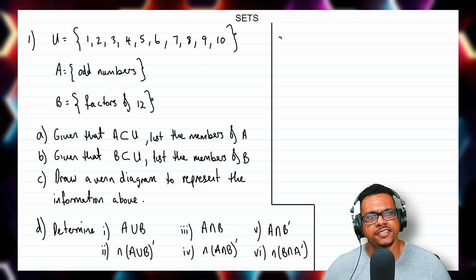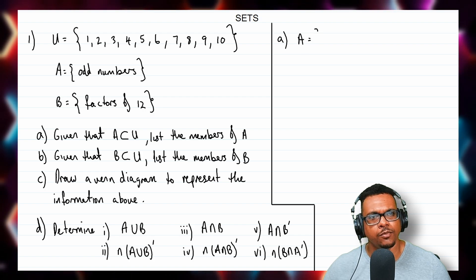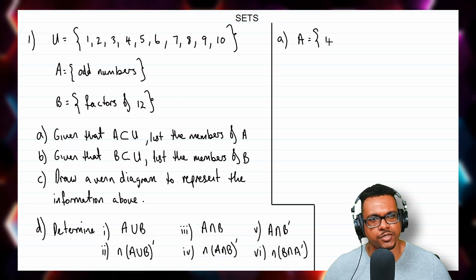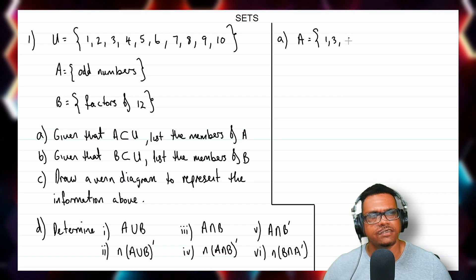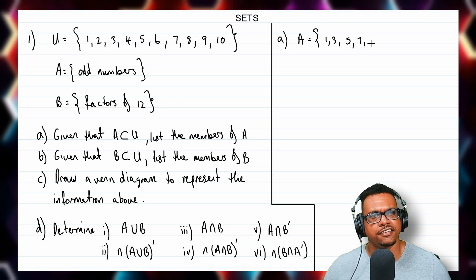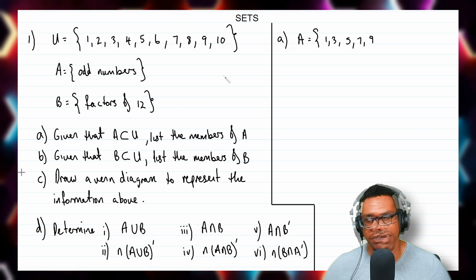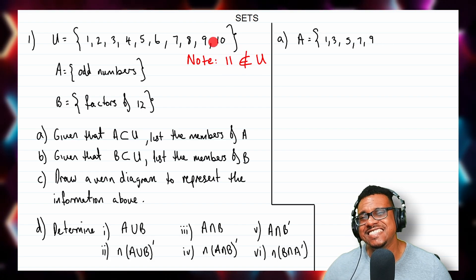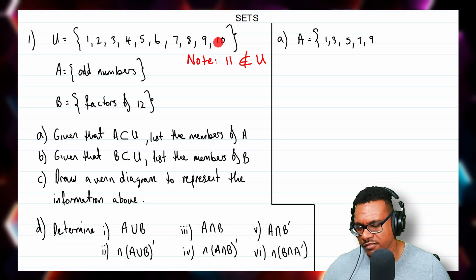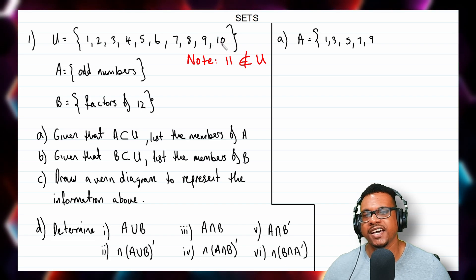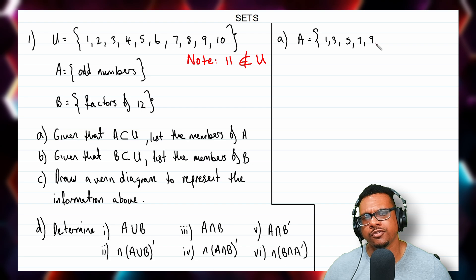So for part A, set A is equal to {1, 3, 5, 7, 9}. As we go to 11, that's more than 10 and 11 is not contained in the universal set — it's not a member of the universal set. Therefore we can't include 11 in set A, so we stop at 9.